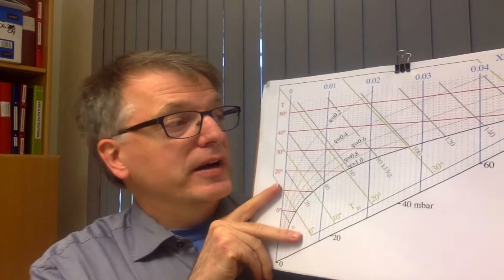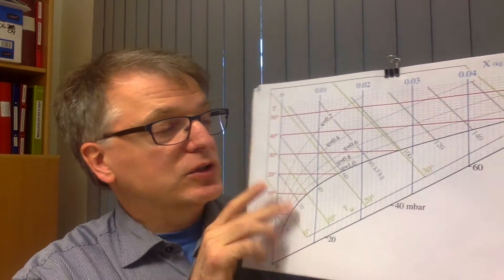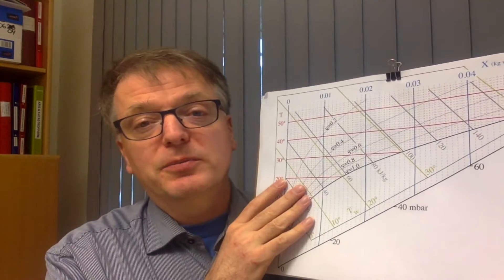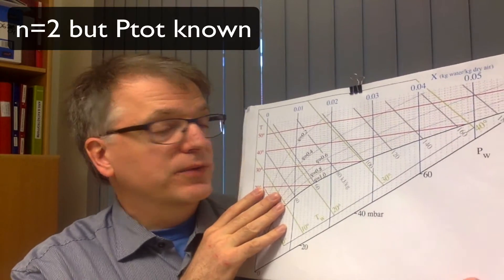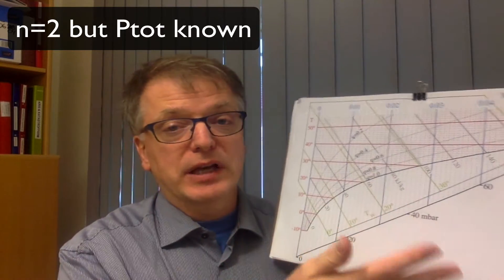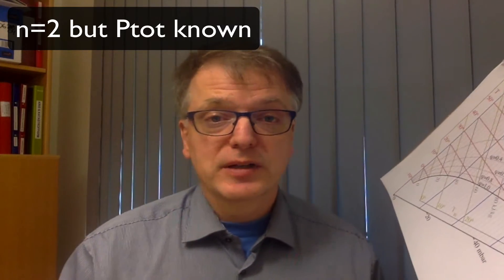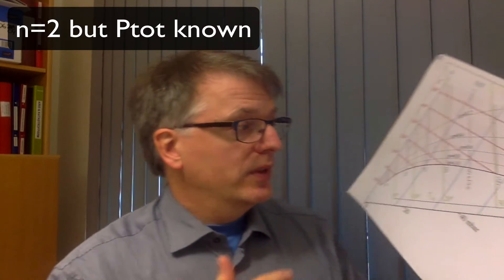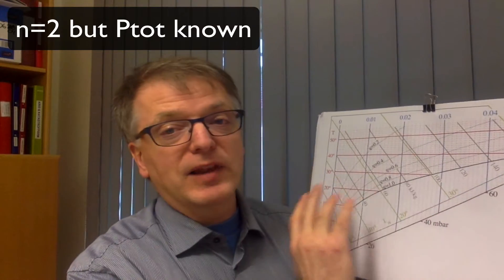Now, when we draw a diagram like this, we actually draw it for a specific total pressure. So if we change the pressure, we need to change the diagram. So we already used one degree of freedom, and then we only have one left, since the total number of degrees of freedom was two. So we should find some kind of line here.